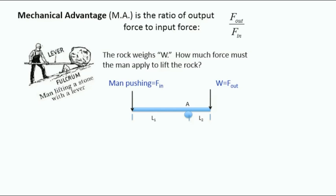An important concept when considering machines is mechanical advantage. The mechanical advantage of a machine is the ratio of the output force to the input force. Let's see how this is put in action with a simple machine of using a lever arm to lift a stone. How much force would the man have to apply to lift the stone? Applying equilibrium analysis, we can take a moment about A to determine this.